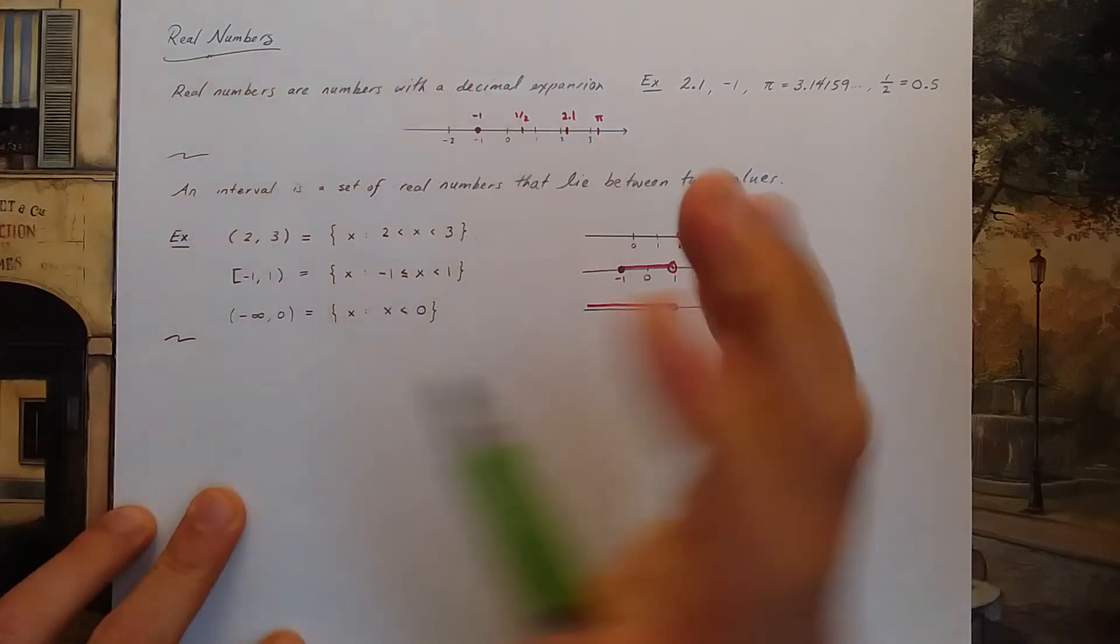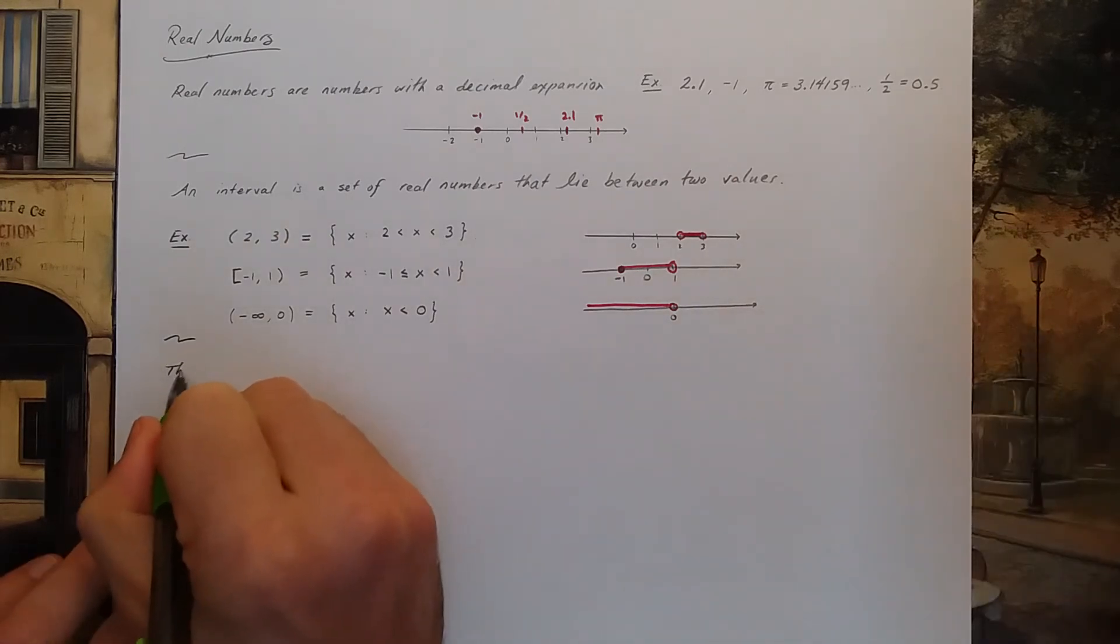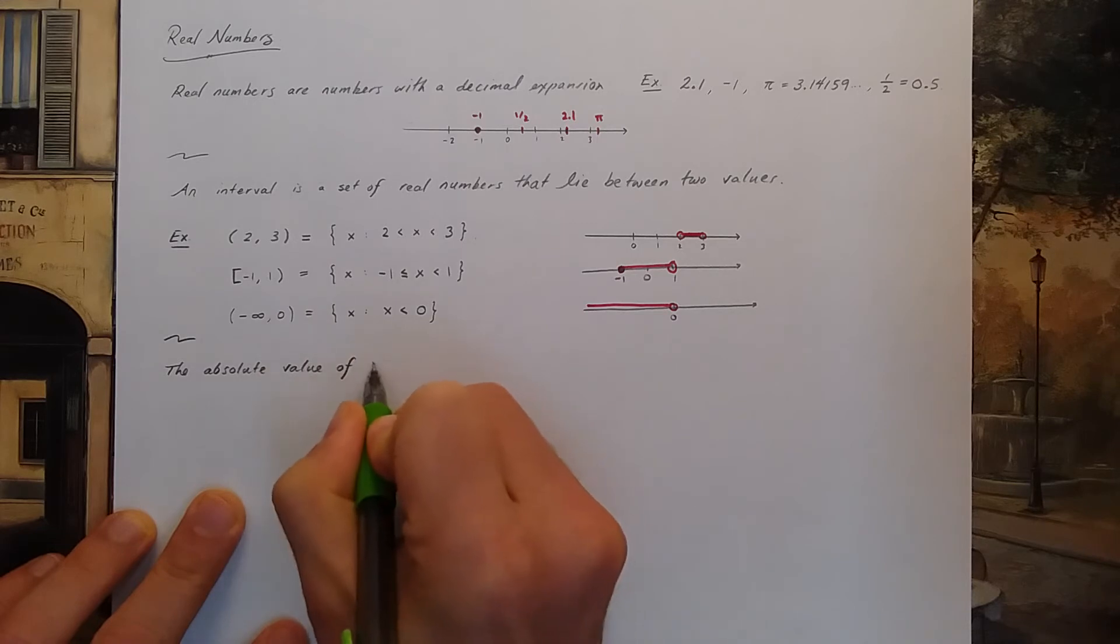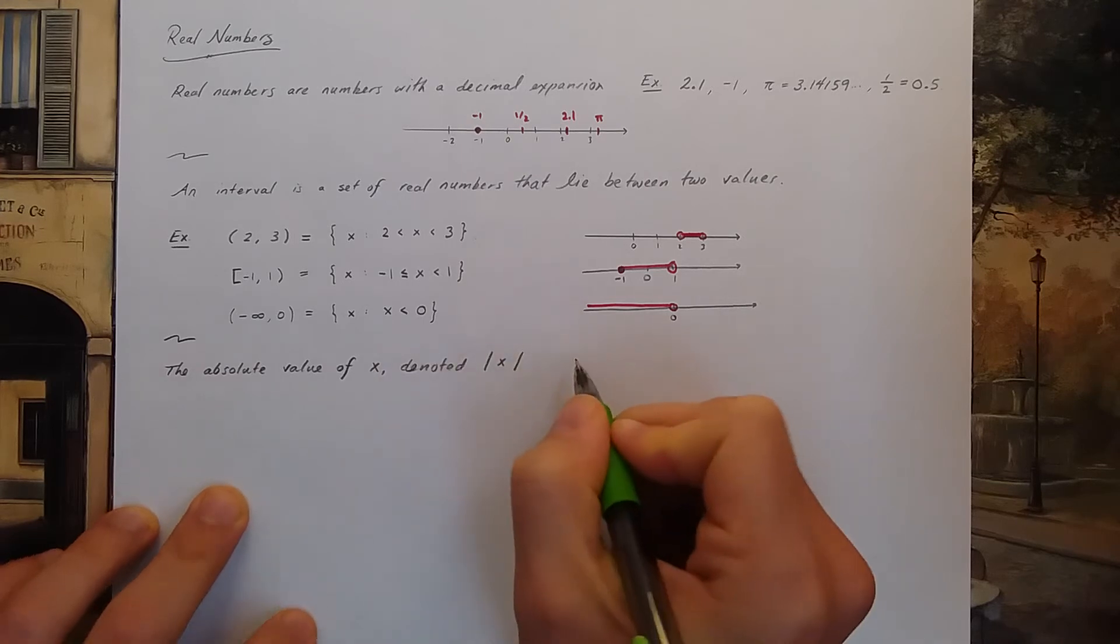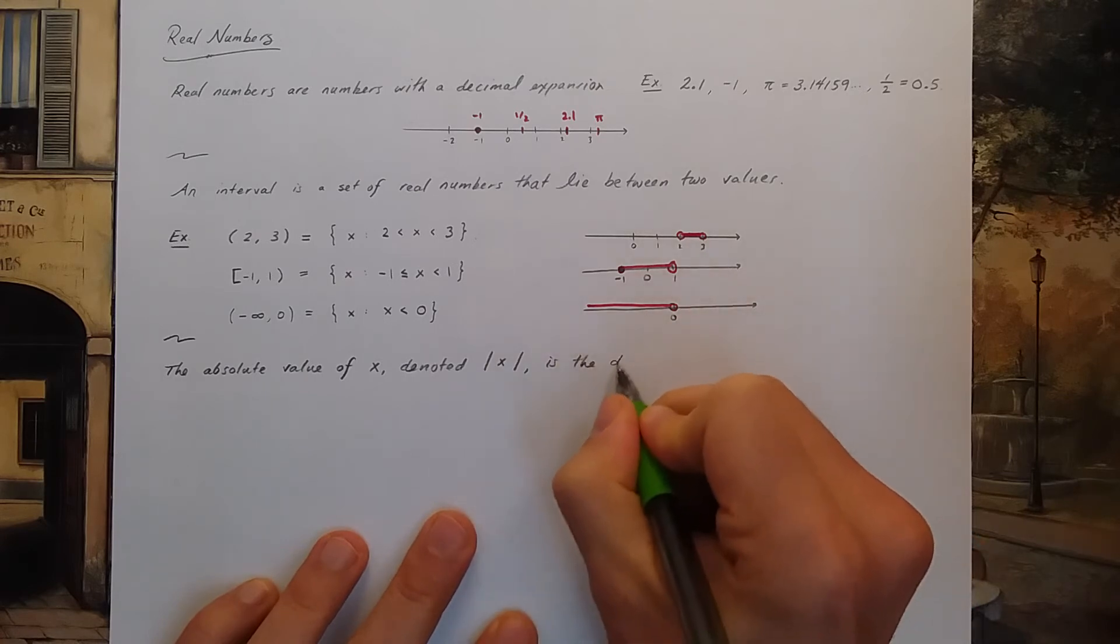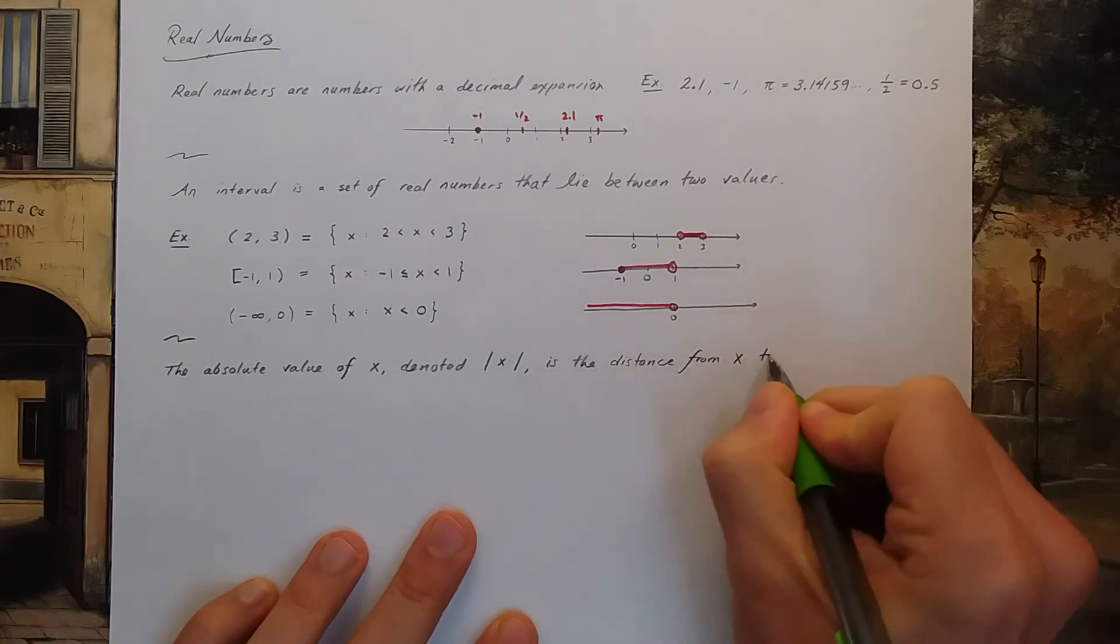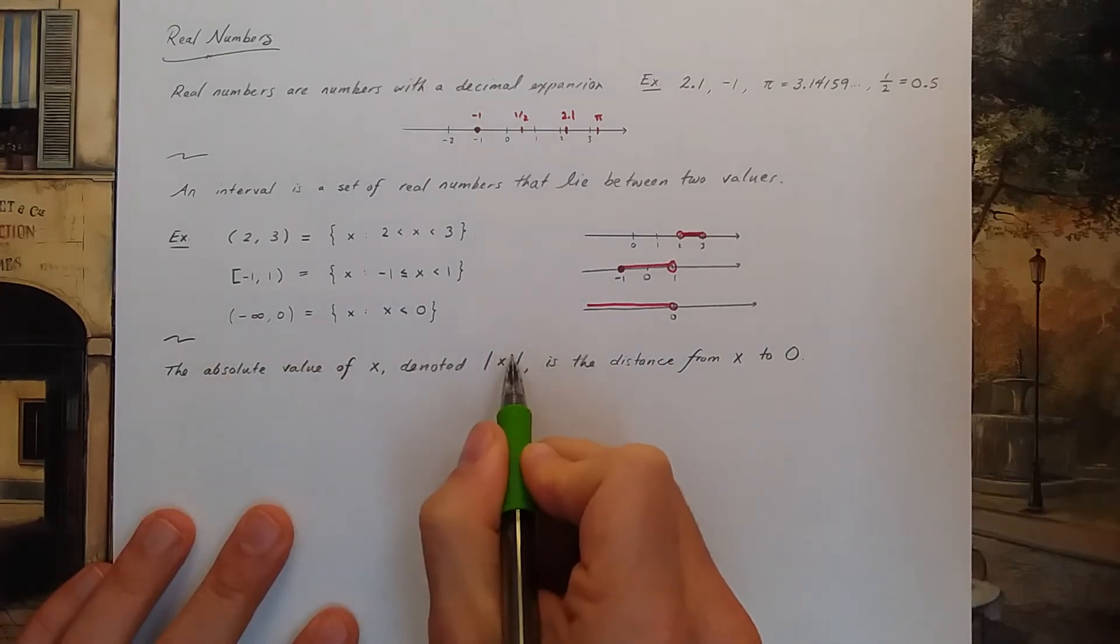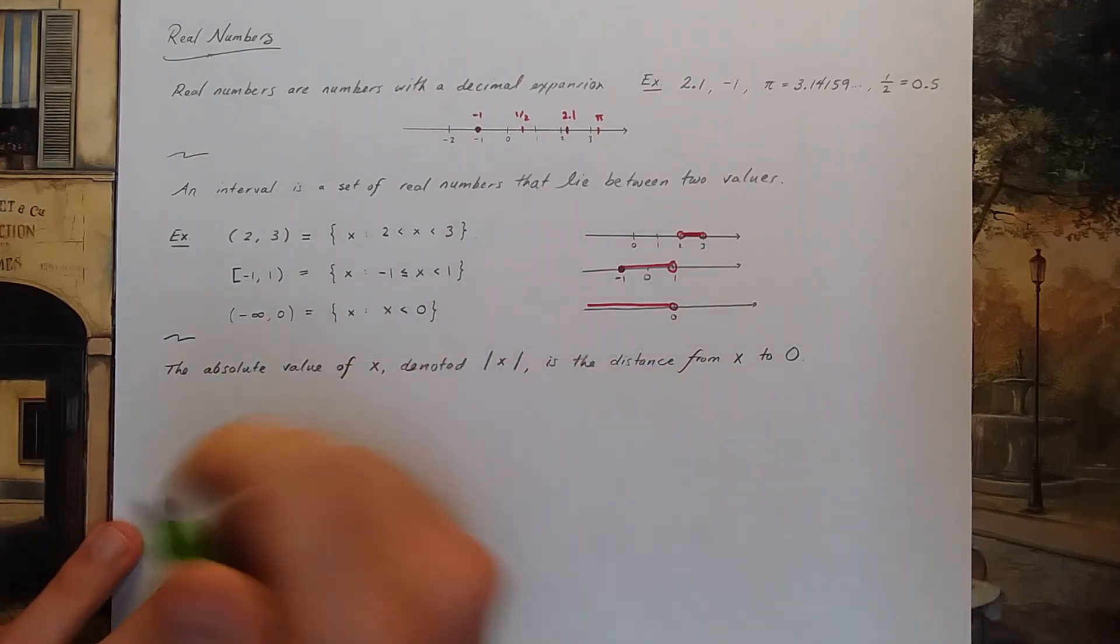I'd like to discuss one last concept in this video, and that is absolute value. The absolute value of a real number x is denoted with bars around the number x. This is the distance from x to 0. When you see absolute value or the absolute value symbol, the thing you should think about is distance or length.